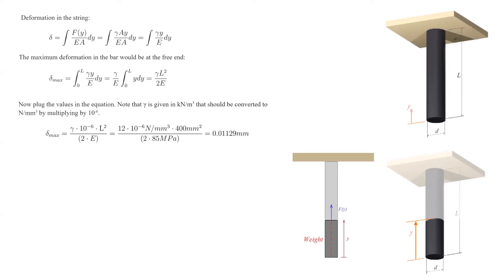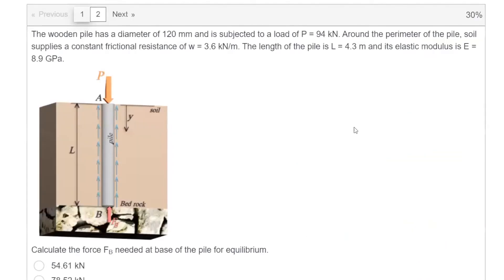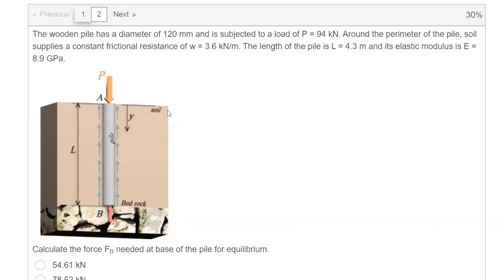Now I'm going to give you a practical engineering problem. A wooden pile is drilled into soil. The soil has two parts: on top there is a clay soil which applies friction on the pile when it's drilled inside, and on the bottom part there is a bedrock which is rigid and firm. When a force P is applied on top of the pile, part of that force is transferred by the bedrock and part is transferred by friction from the clay soil.